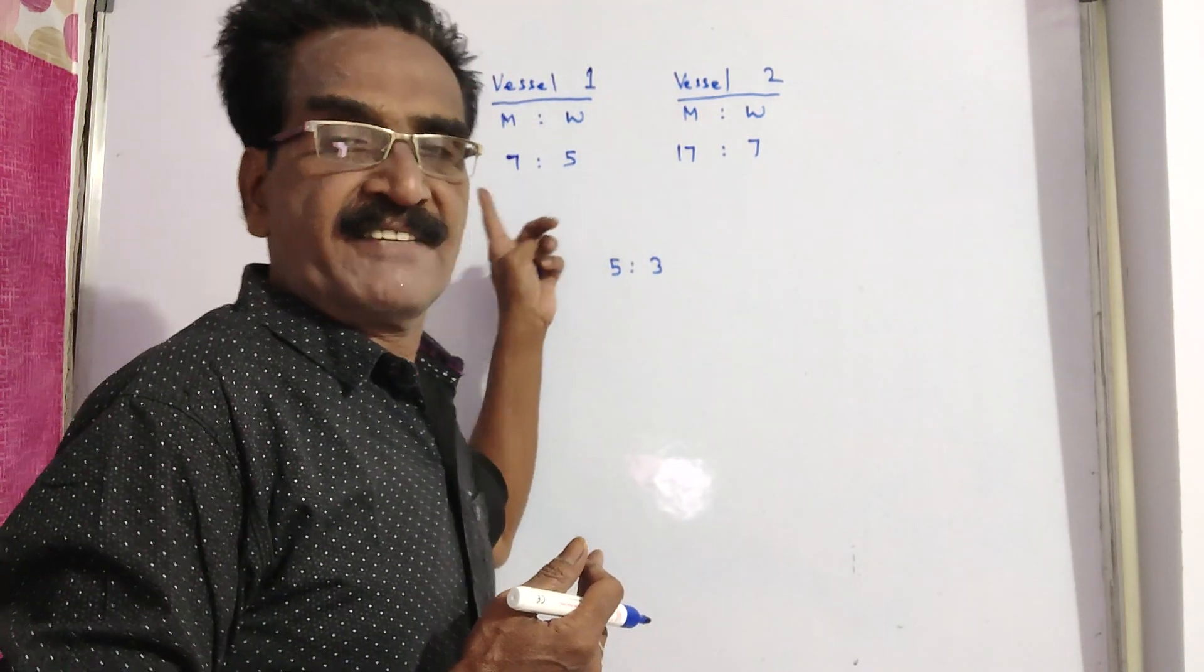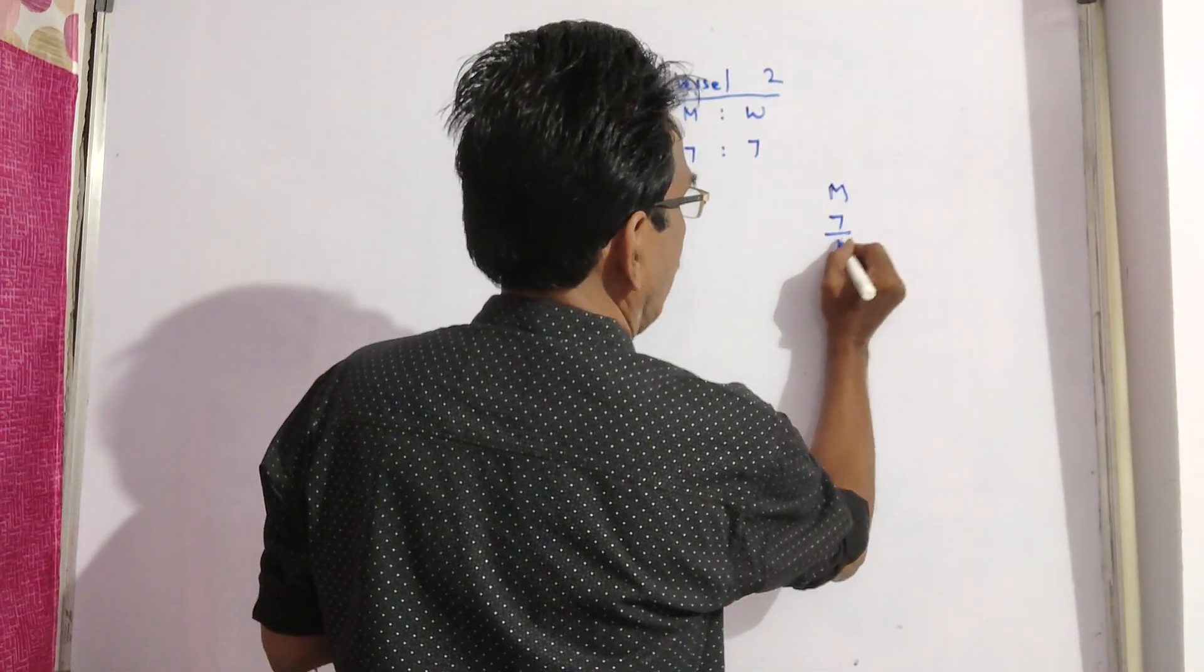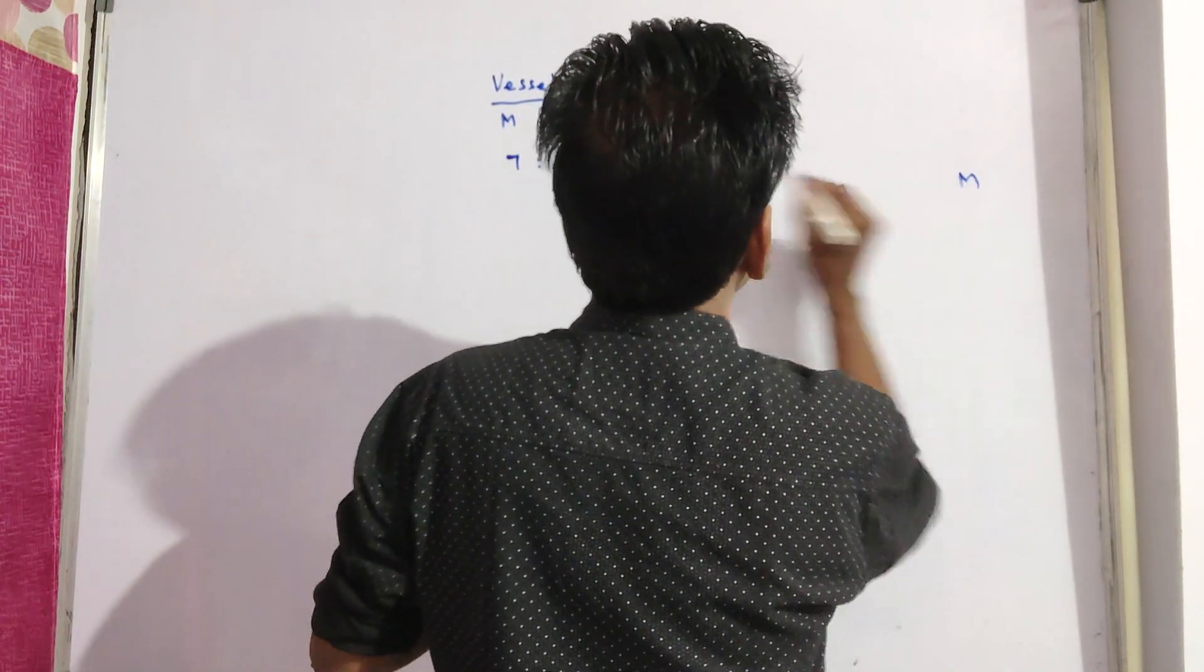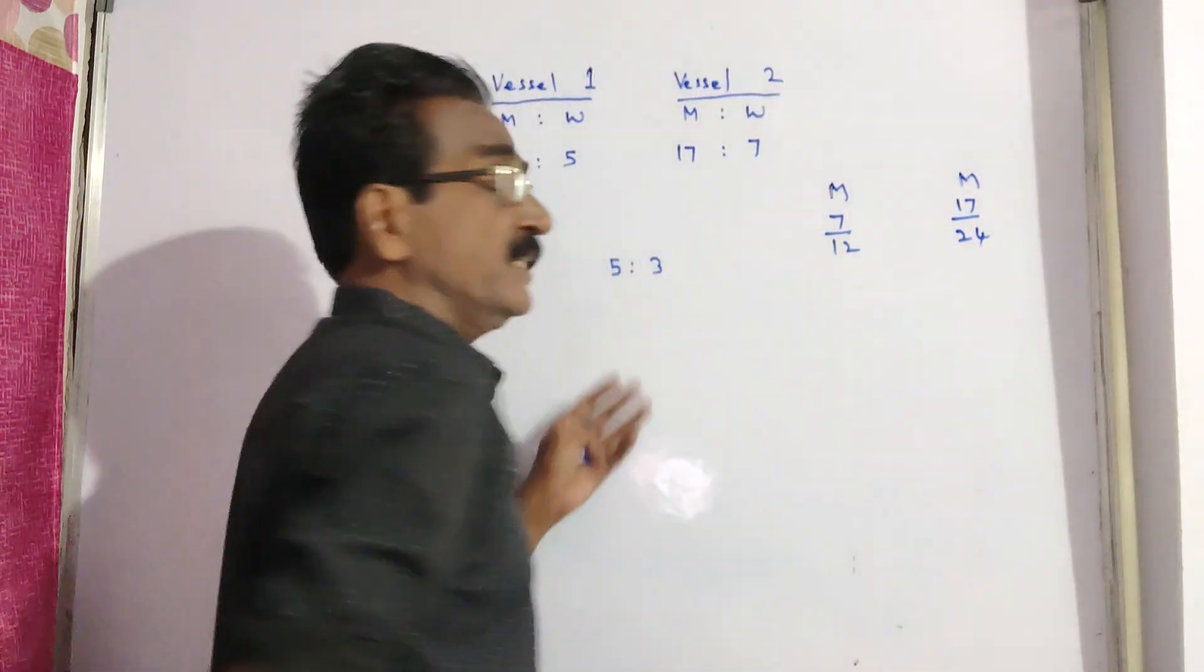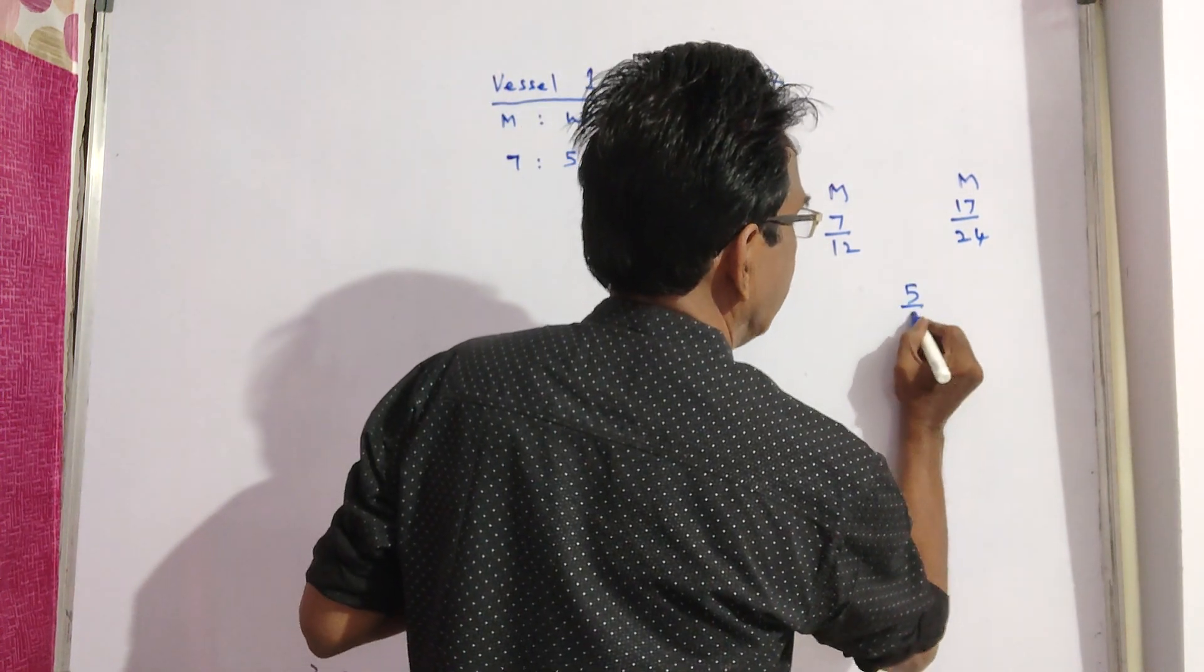In the first vessel, milk is 7 by 12 (7 by 7 plus 5). In the second vessel, milk is 17 by 24. And in the final mixture, the milk must be 5 by 8.